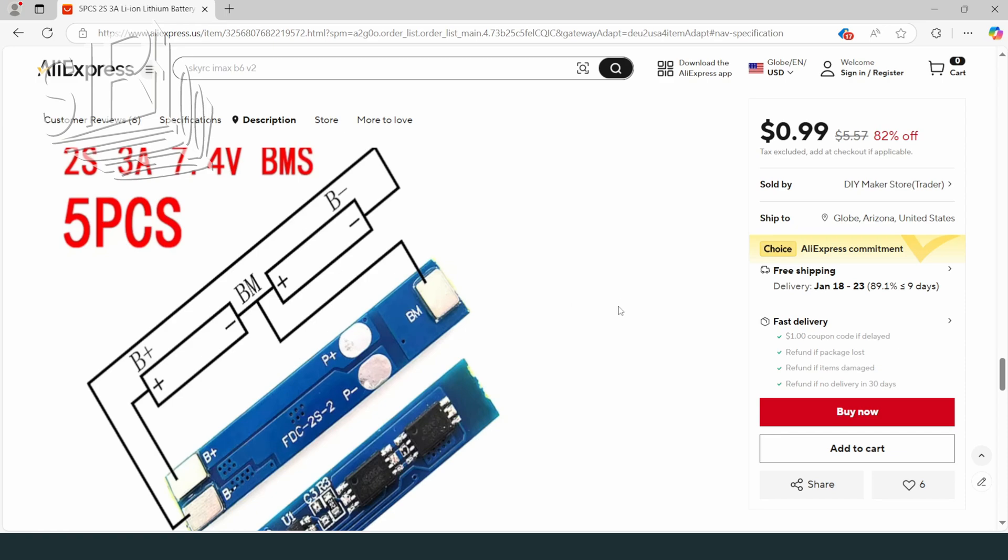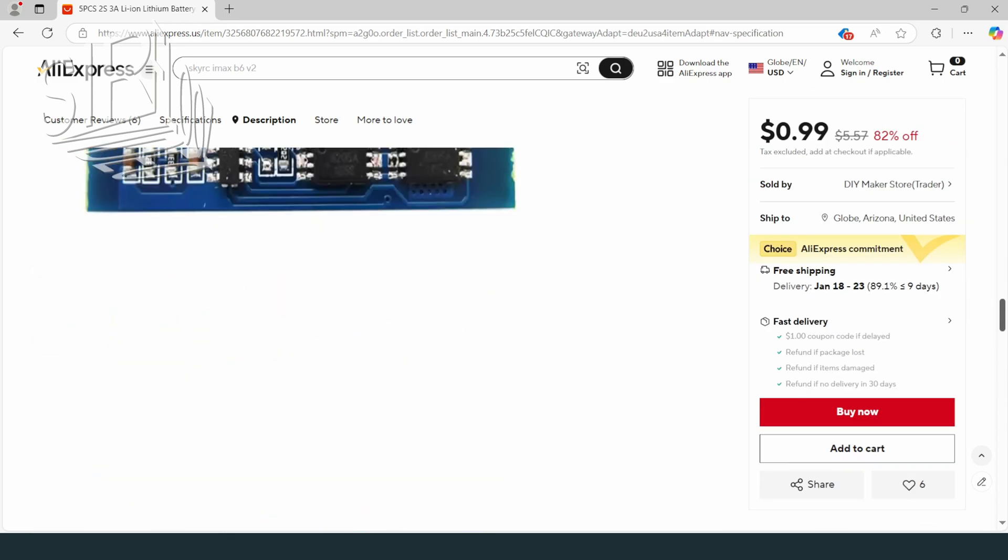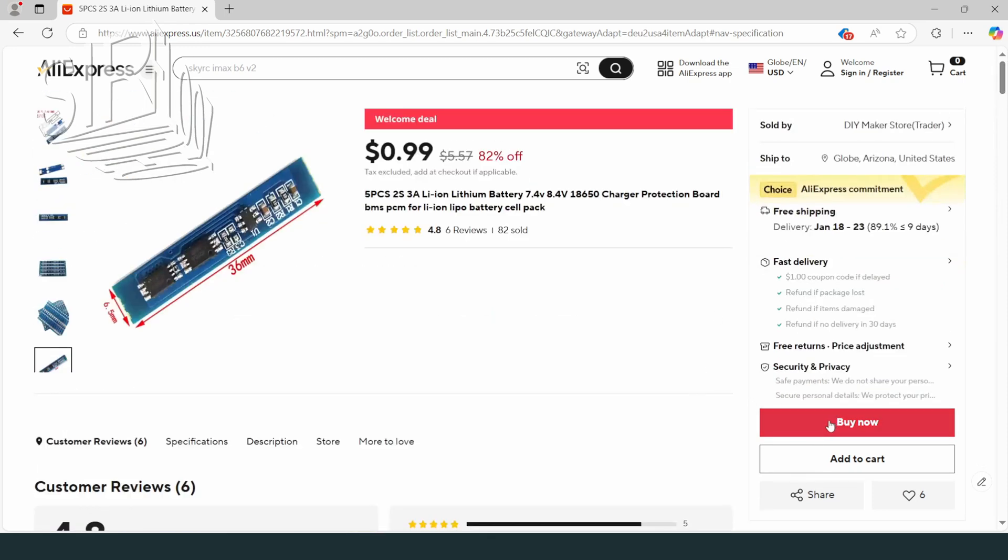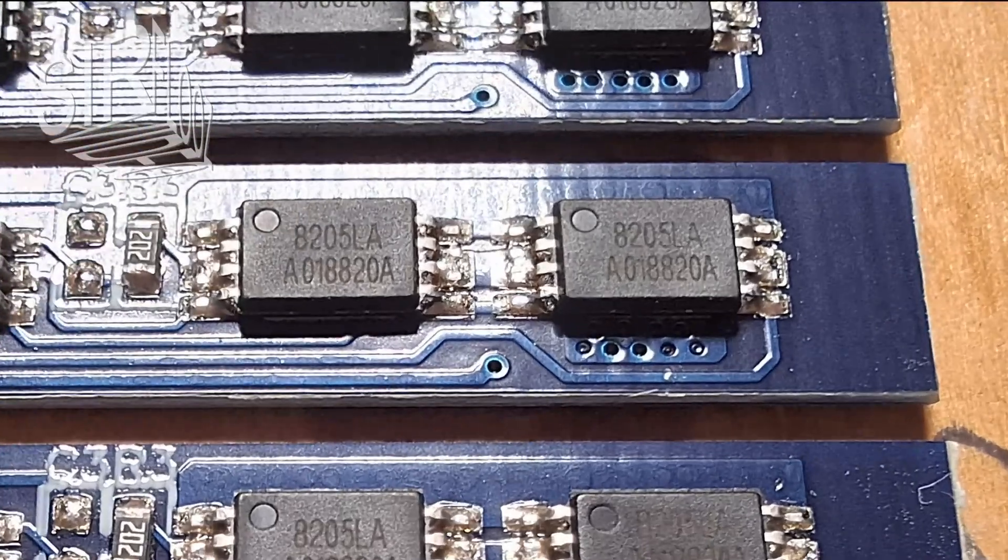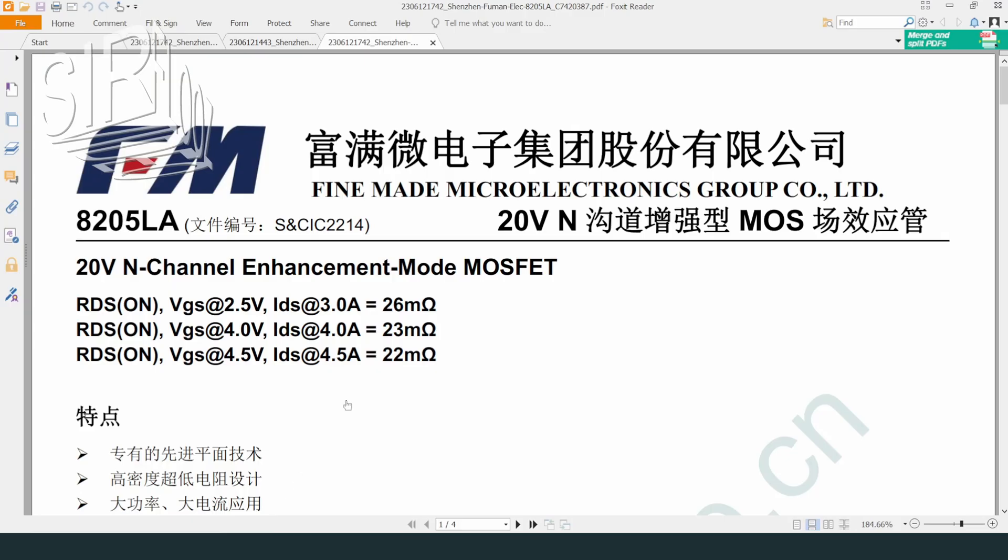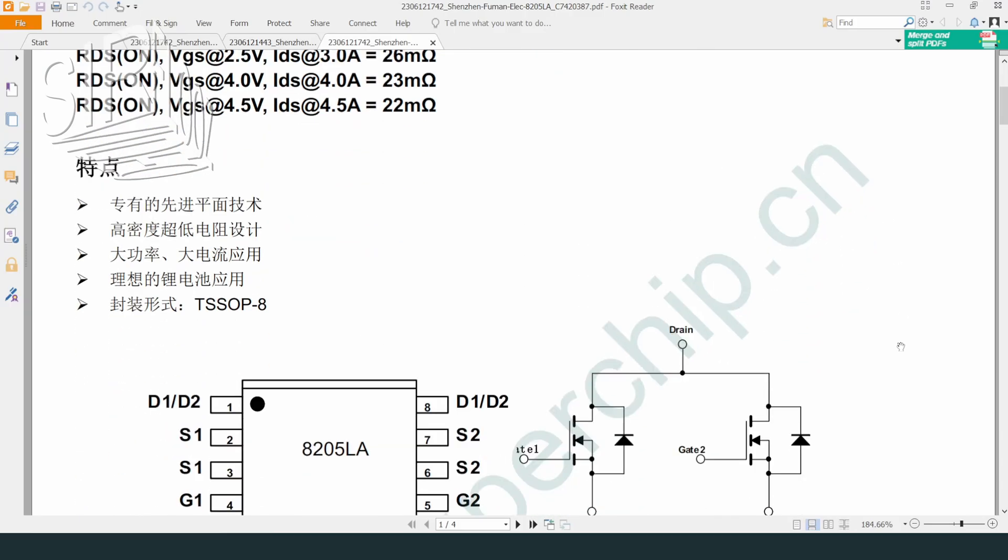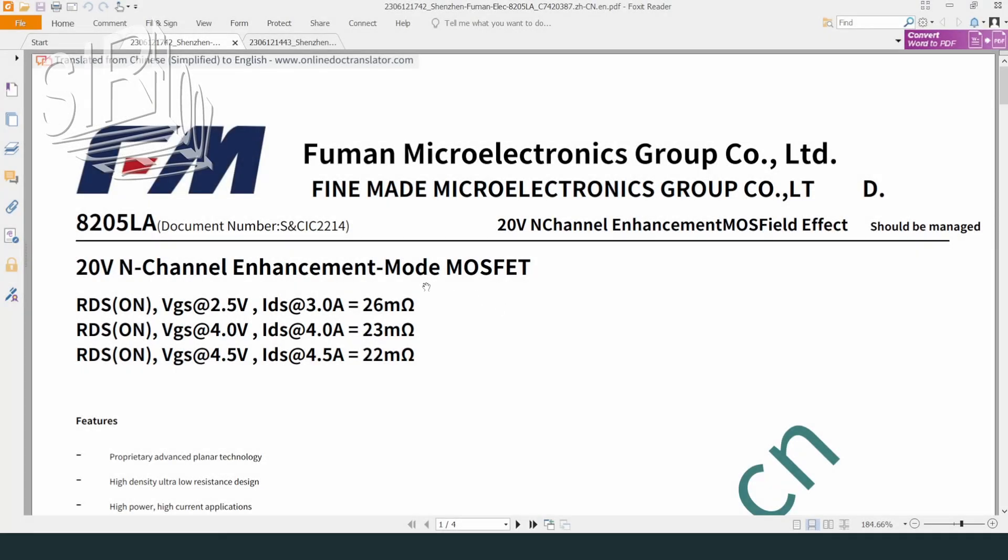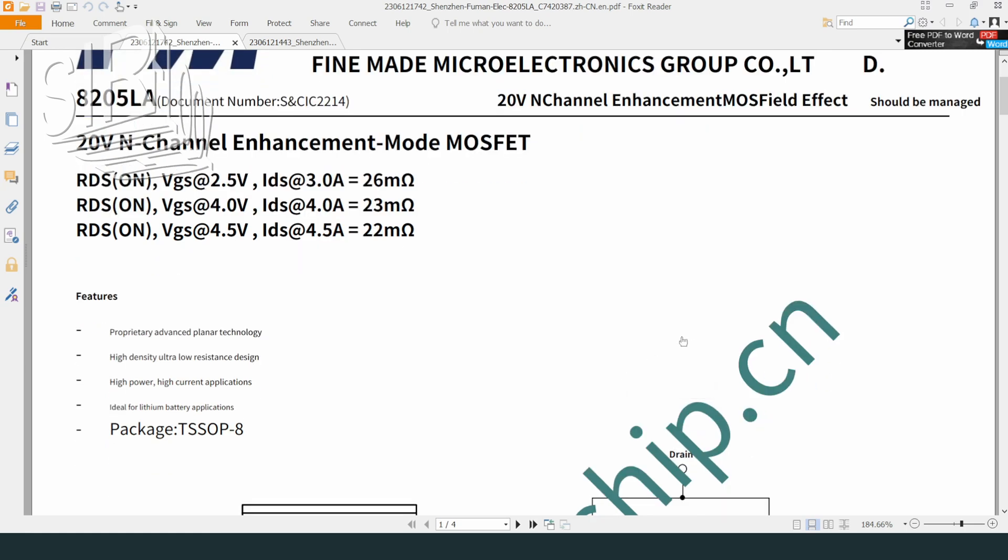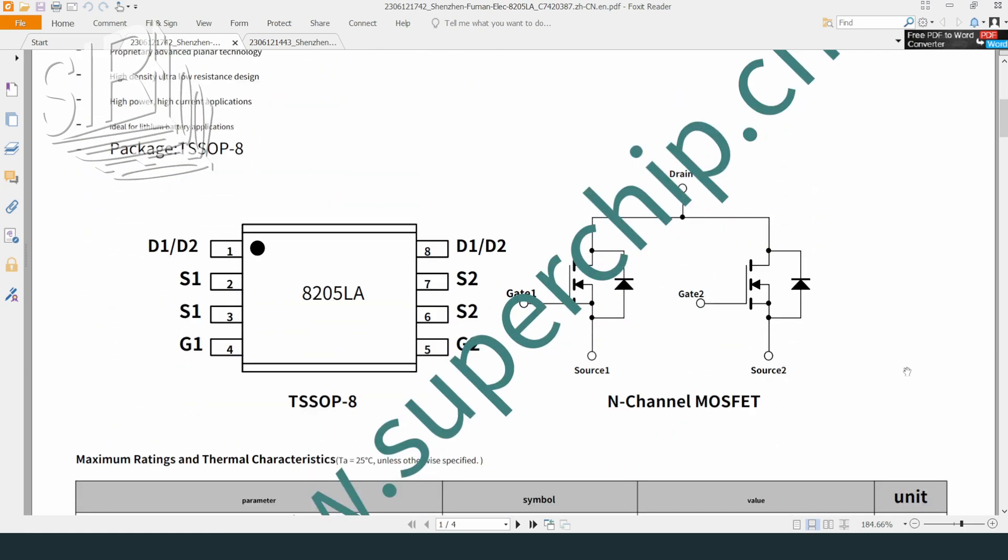But how does the module actually achieve these values? Let's take a look at which components were installed. Here are two ICs of the type 8205LA. I found the Chinese data sheet for this and had it translated into English. They are 20-watt N-channel MOSFETs that get by with an astonishingly low control voltage. These MOSFETs switch the lines of the battery cells on and off.